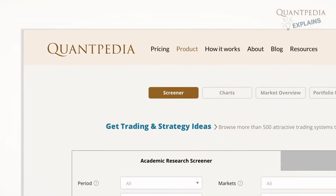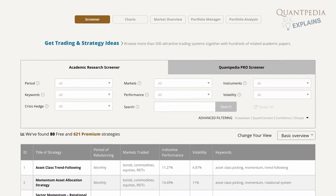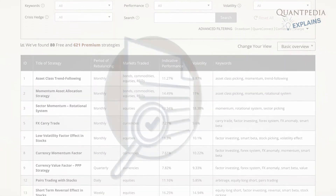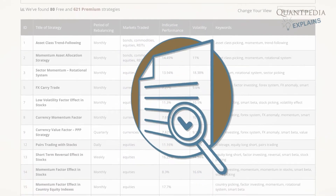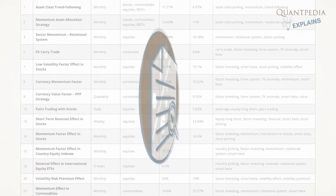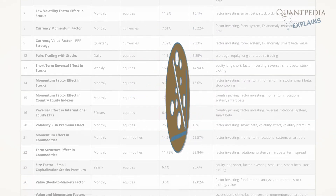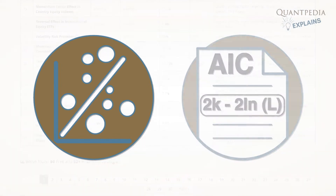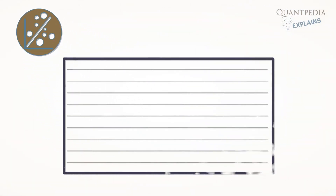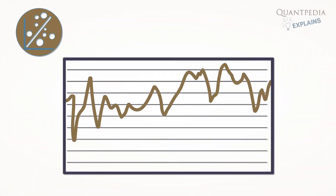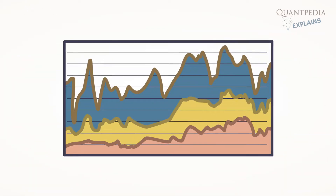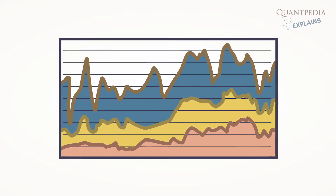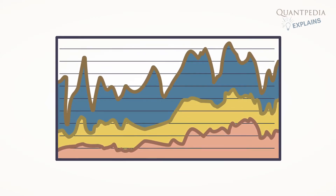At Quantpedia, we have a dataset consisting of numerous typical systematic strategies based on quantitative rules. We identify the dependencies and relationships between our dataset and any given custom equity curve or portfolio with stepwise regression with forward selection, and use Akaike's information criterion to add investment factors until the AIC improves. This methodology ensures that our multi-factor regression is able to find only the most significant investment factors that explain the performance of the analyzed equity curve and not encounter problems associated with classical linear regression analysis, which has many caveats.